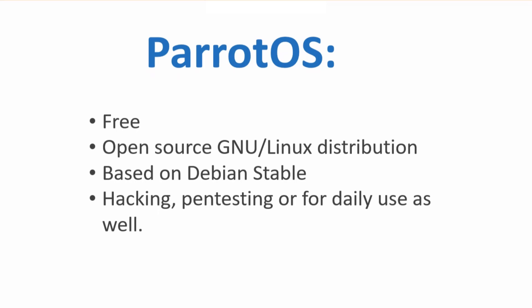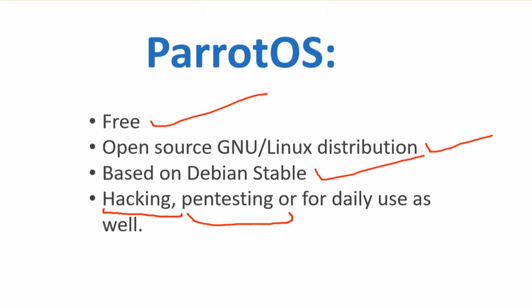When you talk about the Parrot Operating System, it's free, it's open source — a Linux distribution based on Debian stable. If you want to learn ethical hacking, do some pen testing, or use it just like any other operating system, you can do any of that. But at its core, it's actually used for security and forensics kind of stuff. So if you want to be an ethical hacker and do pen testing, this is the operating system you should go for.